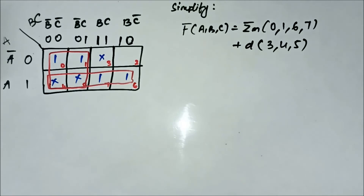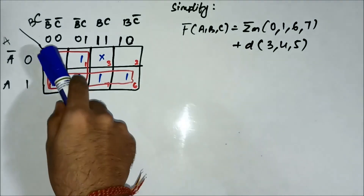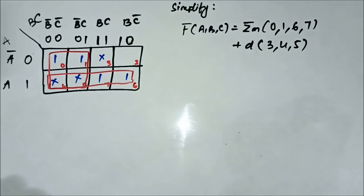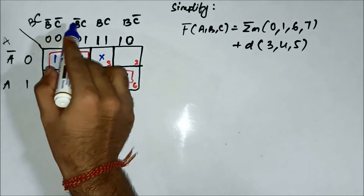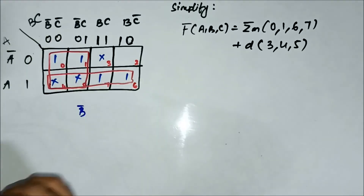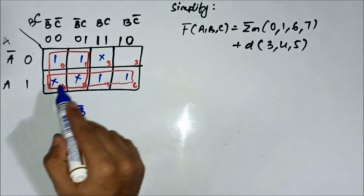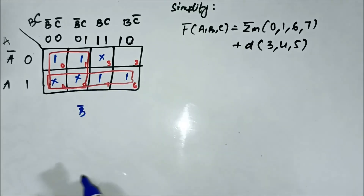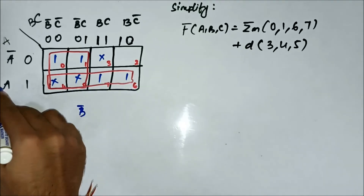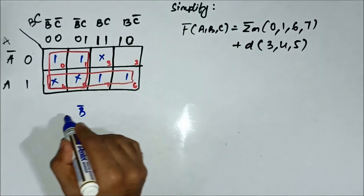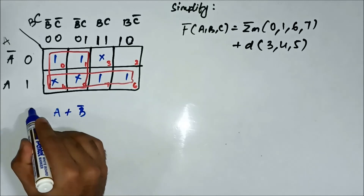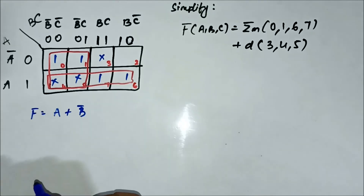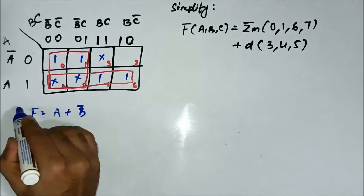Now we identify the variables. For the quad involving cells 0, 1, 4, and 5, there is nothing common on the horizontal side; on the vertical side we have B-bar. For the quad involving cells 4, 5, 6, and 7, it is A on the horizontal side, nothing on the vertical side. So the simplified Boolean expression is A + B-bar.